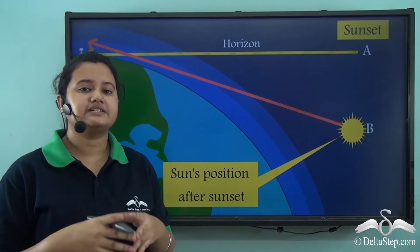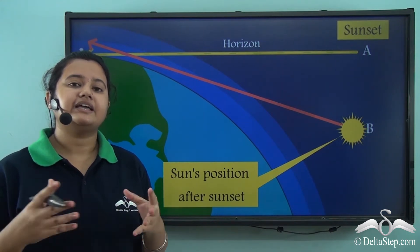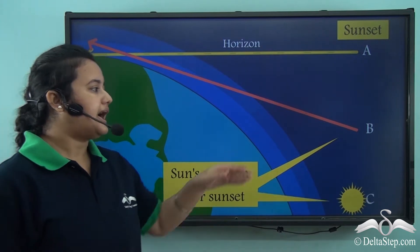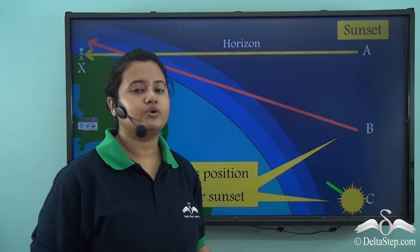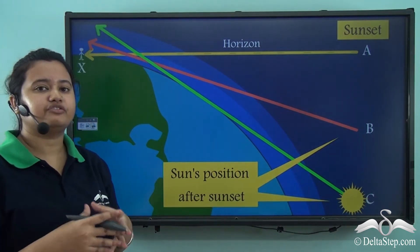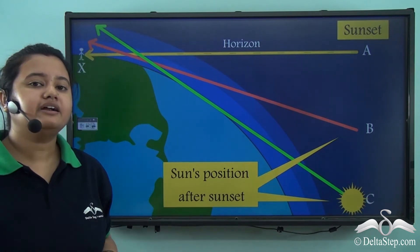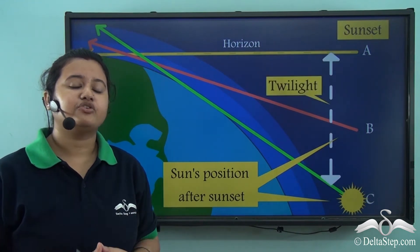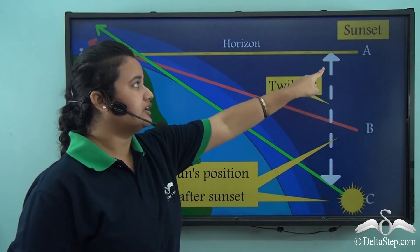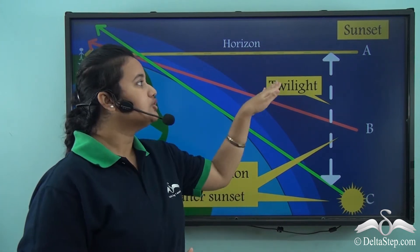Here, the scattering of light is less and therefore the sky fades out to complete darkness. So this position from A to C refers to the time of partial light, or twilight.